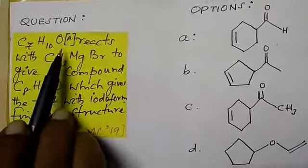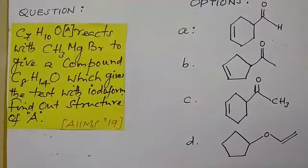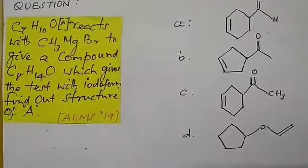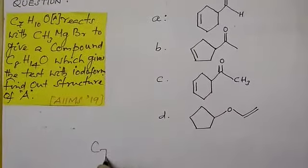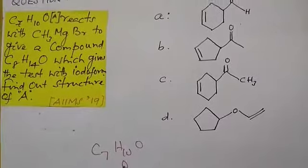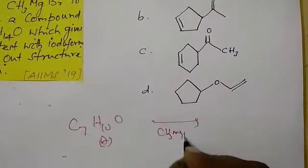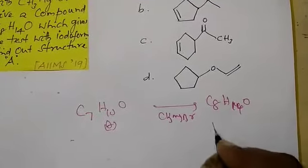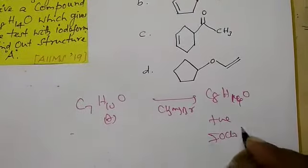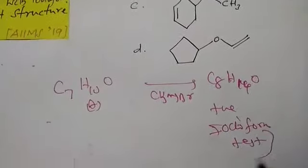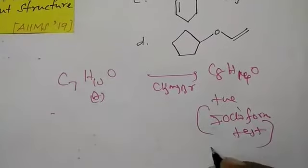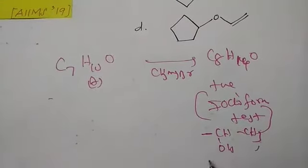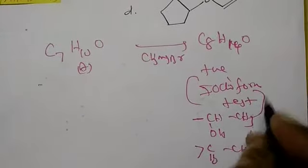Here what is given is: C7H10O reacts with methyl magnesium bromide to give a compound C8H14O, which gives a positive iodoform test. The main knowledge is: if it is positive for the iodoform test, the product should contain the methyl ketone group (CH3CO–) or the secondary methyl alcohol group. This group should be present in the product.